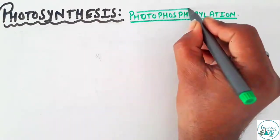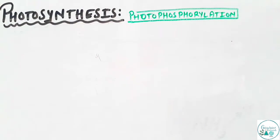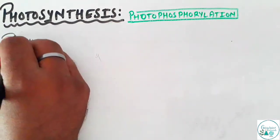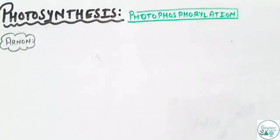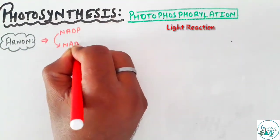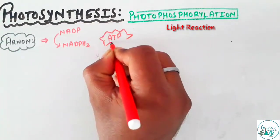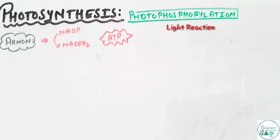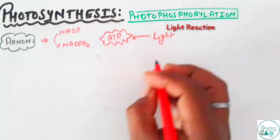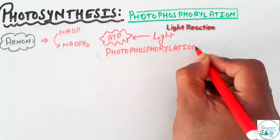In this particular video, we would talk about photophosphorylation, a very important part of light reaction other than photolysis of water. As per Arnon, it is not that during the light reaction only the NADP is reduced to NADPH2, but also there is the formation or synthesis of ATP, which is directly related to the presence of light. And since light plays a role in the process of formation of ATP, it is called photophosphorylation.